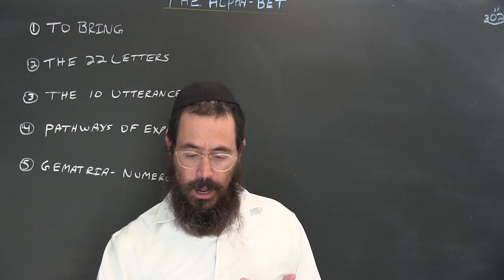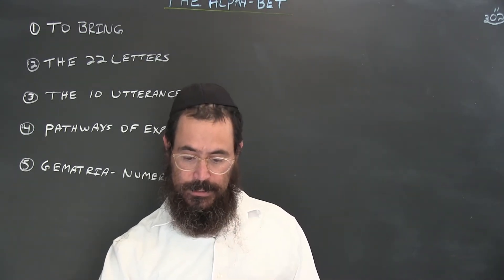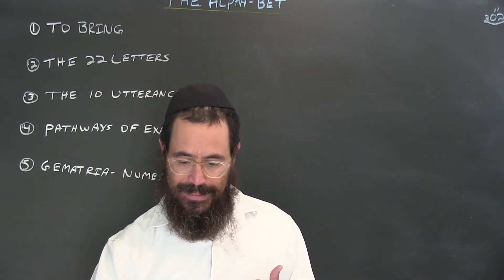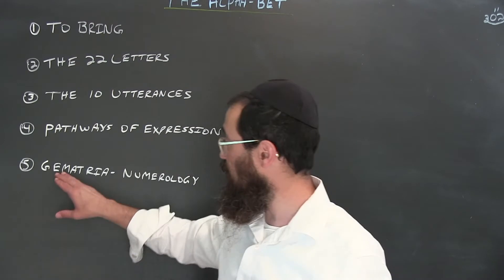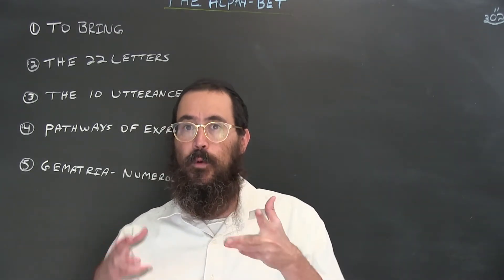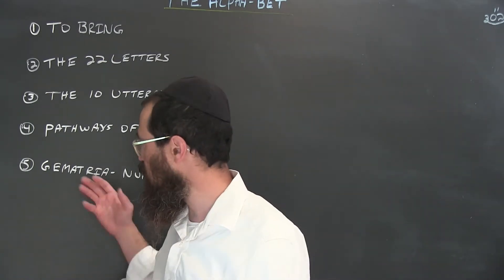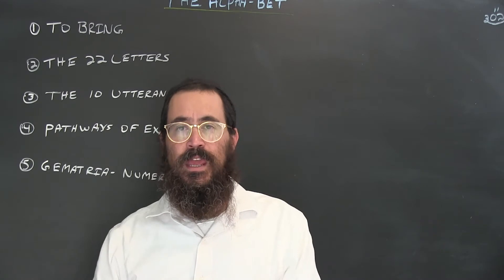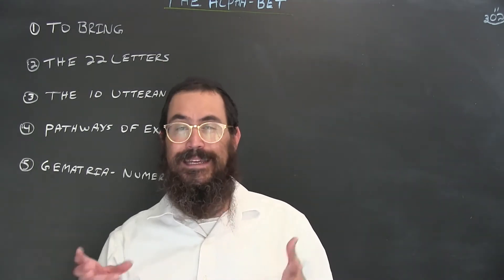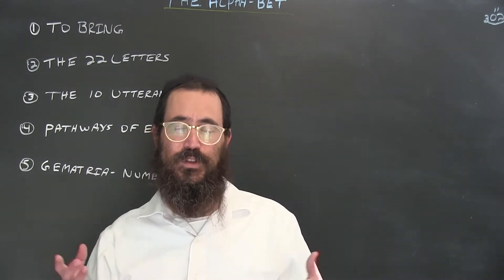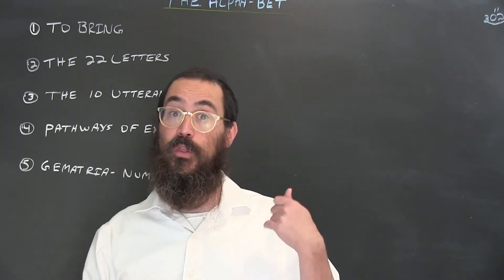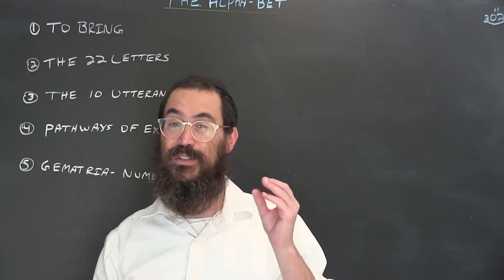Speech connects us to the speaker, and we know about the speaker through what and how they say things. This brings us to the concept of gematria. Gematria comes from the Greek word 'geometrica,' meaning geometry — the science of numbers. Gematria is the numerology of the Hebrew alphabet: each letter has a numerical value. Aleph is one, bet is two, gimel is three, dalet is four, and so on up to the letter yud, which is ten.